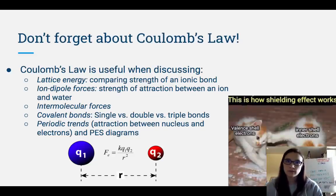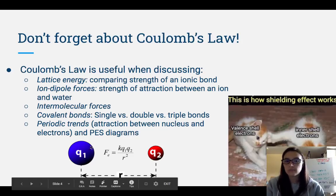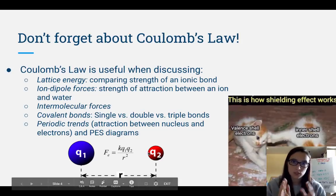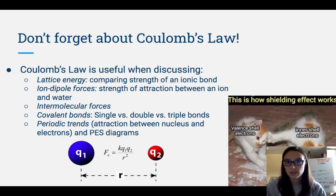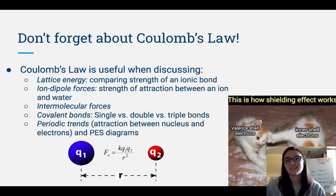Coulomb's Law is something that can be useful when discussing a variety of topics. Coulomb's Law looks at the attraction between two particles — it could be a proton and an electron — looking at the force between two charged particles. K is just a constant; Q1 and Q2 are the charges; R is the radius or distance between those two charged particles. Coulomb's Law is useful when discussing lattice energy — the energy required to break an ionic bond. When comparing lattice energies, such as magnesium oxide versus sodium oxide, the higher the charges, the stronger the attraction, and the smaller the ions, the closer they are together and the stronger the attraction.